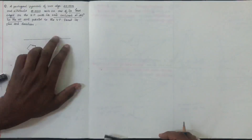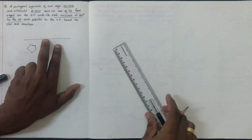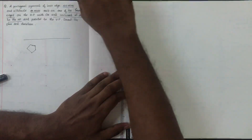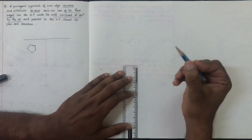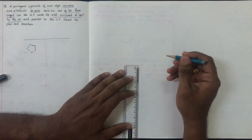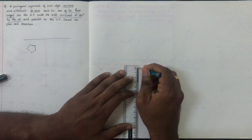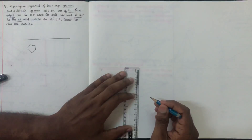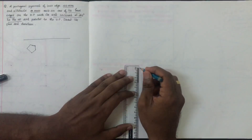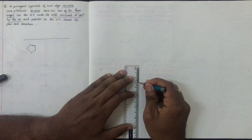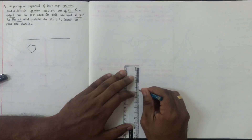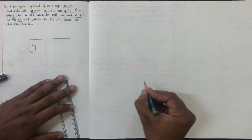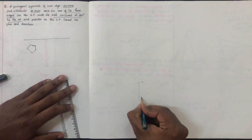The pentagonal pyramid — focus on this pentagonal pyramid. The right side is rotating. The base edge is about 40mm. We need to identify one side — this side is AB.